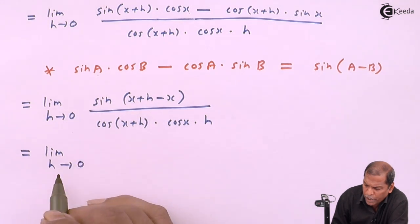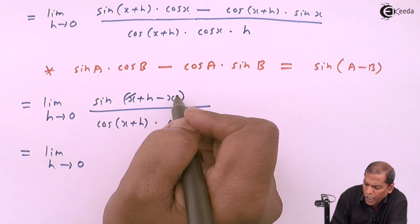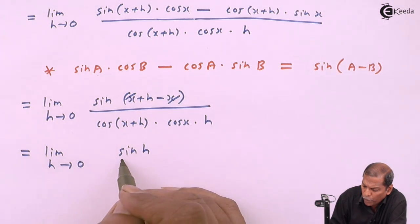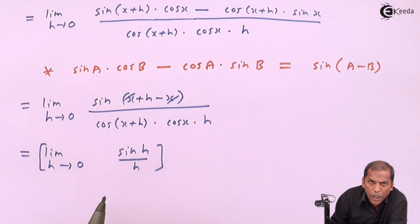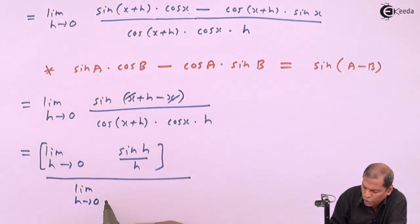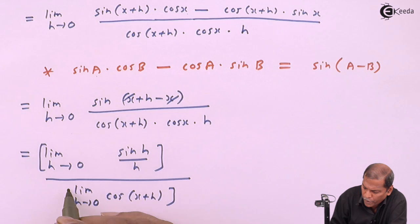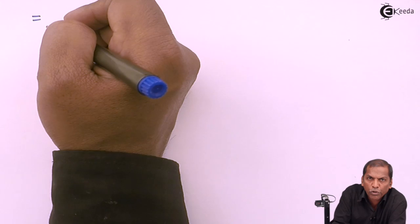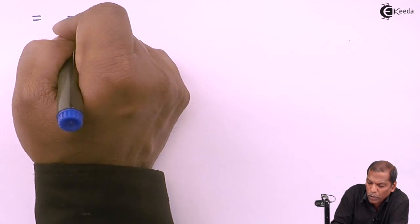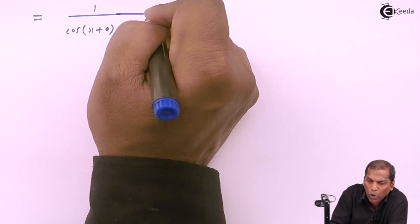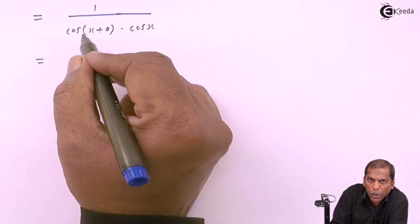That equals limit h tends to zero. Now here the plus x and minus x cancel, so we are left with sin(h) in the numerator. To apply the standard limit rule, we take h from the denominator separately: limit h tends to zero of sin(h)/h, which gives 1, divided by limit h tends to zero of cos(x + h) into cos(x). Substituting h = 0 gives 1 upon cos(x) into cos(x).